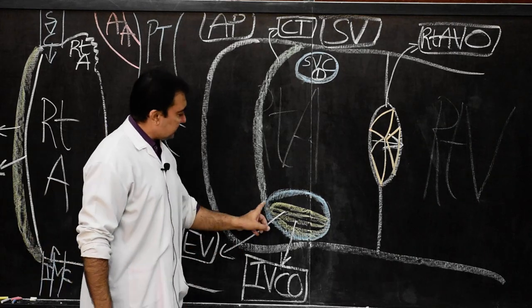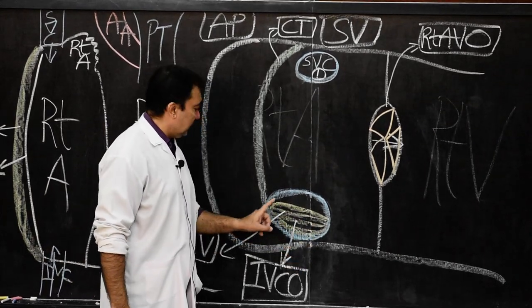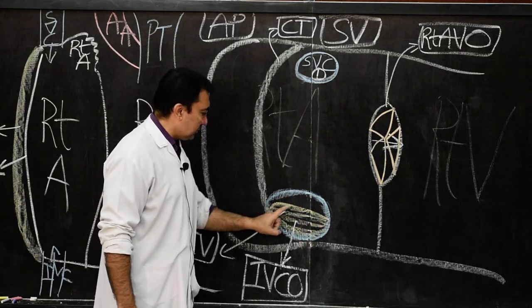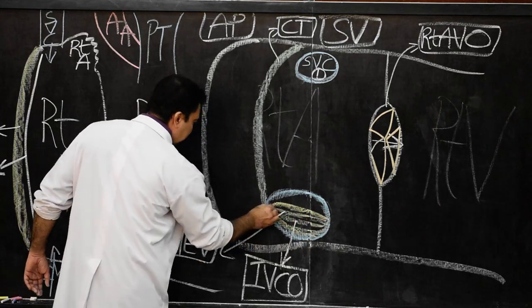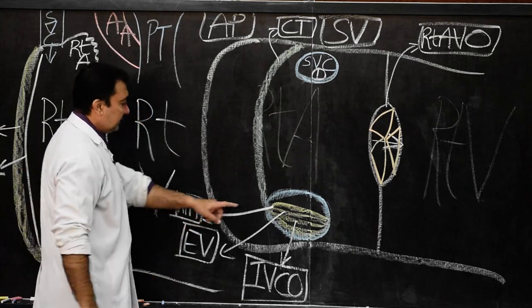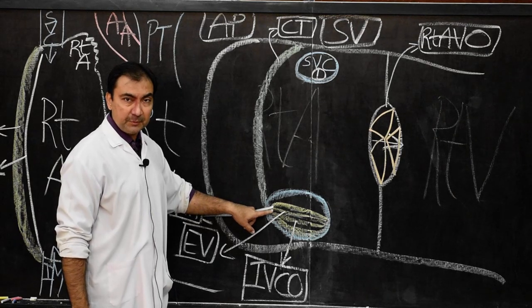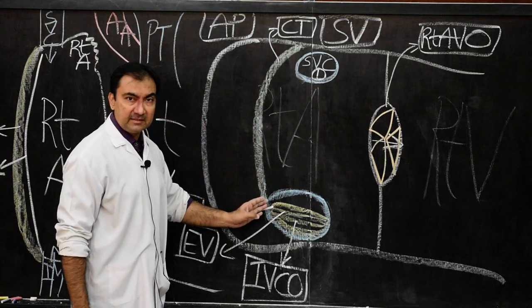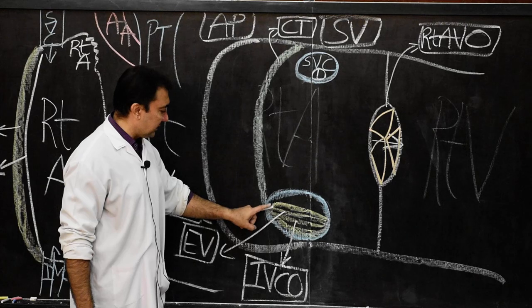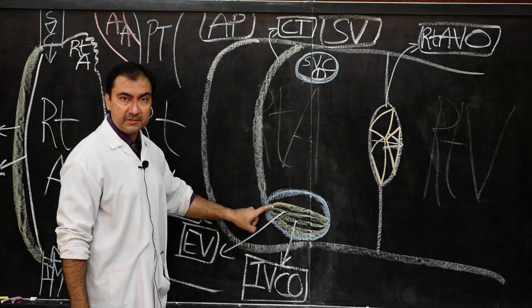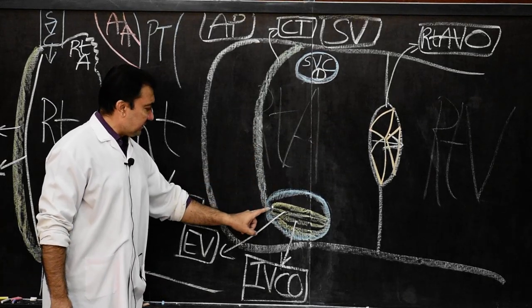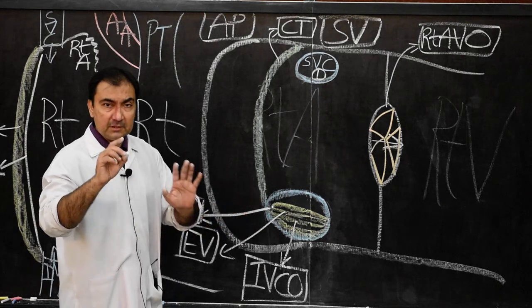Two points about the eustachian valve: since it is semilunar, it has a right horn and a left horn. The right horn of the eustachian valve will be continuous with the lower edge of the crista terminalis. This is commonly asked in MCQ or one-mark questions: the lower edge of crista terminalis is continuous with the right horn of the eustachian valve.